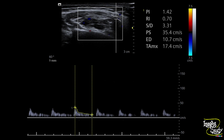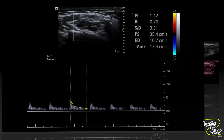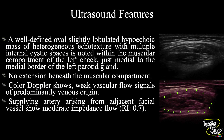The histopathology of this lesion was done and it was concluded as a case of hemangioma. In summary, a well-defined oval slightly lobulated hypoechoic mass of heterogeneous echotexture with multiple internal cystic spaces is noted within the muscular compartment of the left cheek, just medial to the medial border of the left parotid gland. There is no extension beneath the muscular compartment. Color Doppler shows weak vascular flow signals of predominantly venous origin. The supplying artery arising from adjacent facial vessels shows moderate impedance flow, concluding this as a case of cheek hemangioma or facial hemangioma.